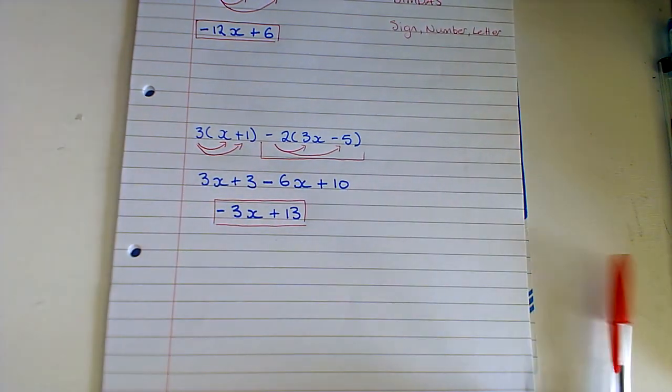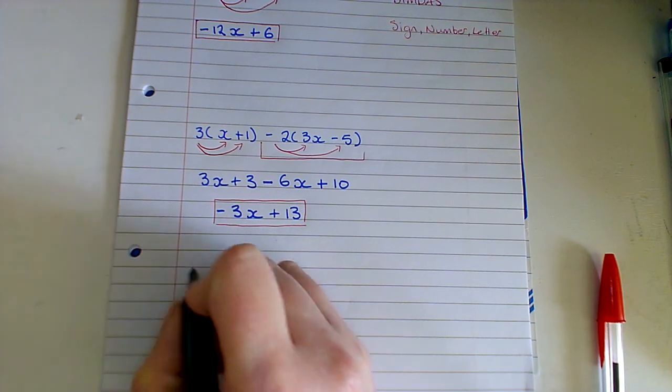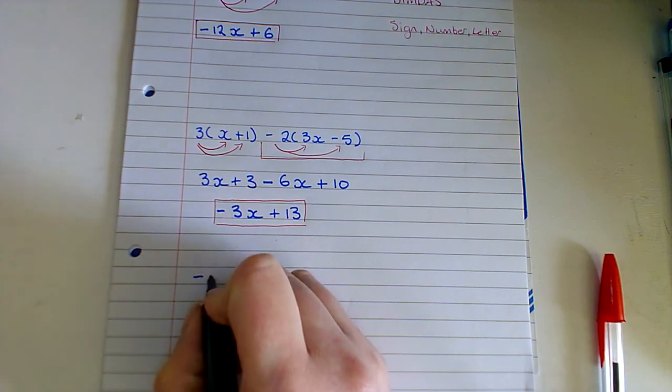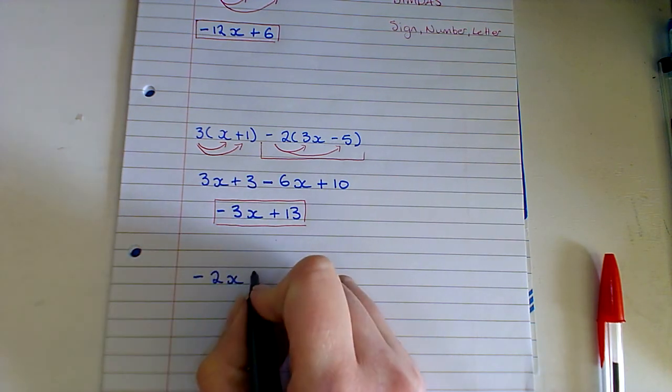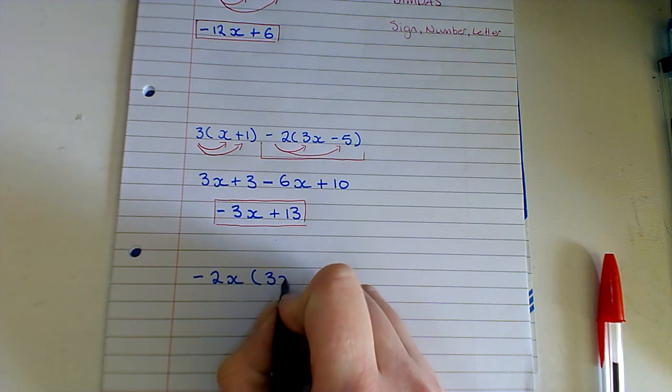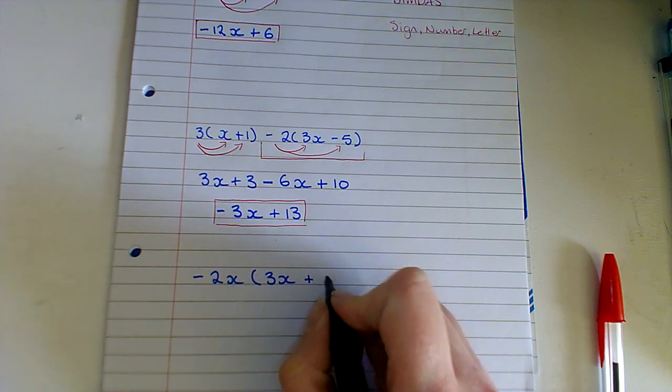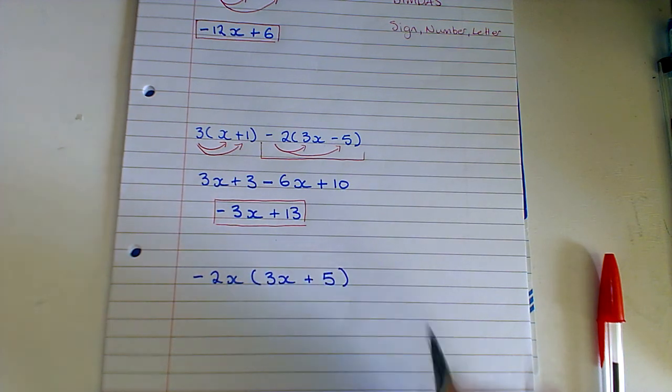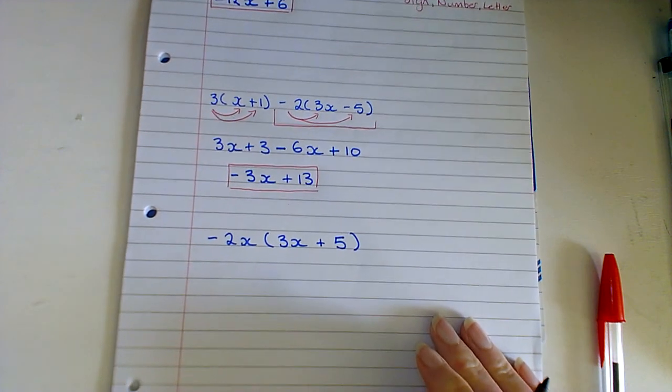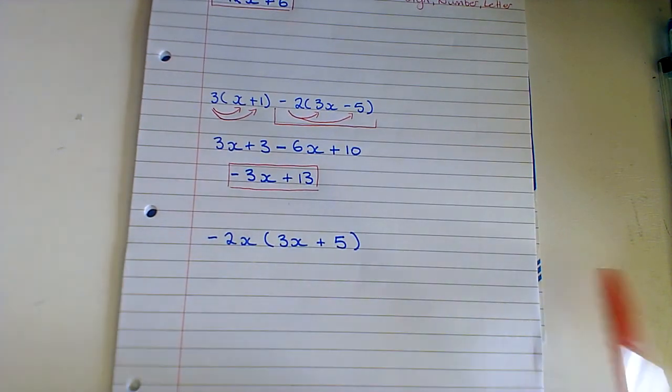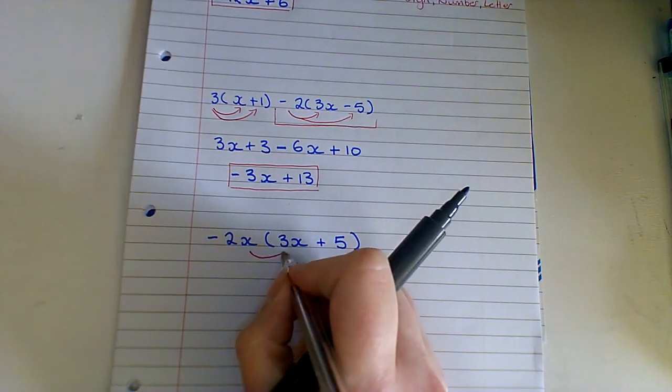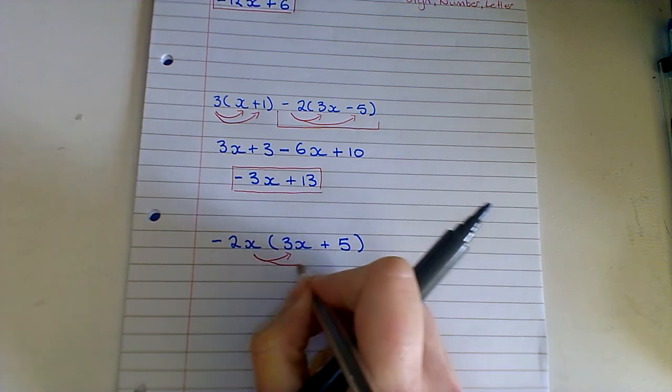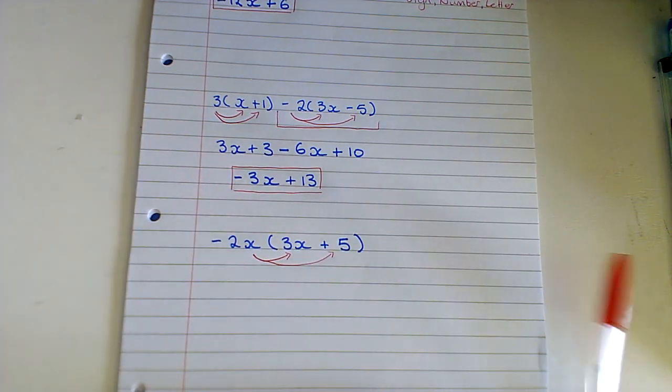I'm going to just do another one where you have maybe two letters coming up against one another. So just what would you do in that instance. So if you consider this sum: minus 2x multiplied by 3x plus 5. Again just because there's an additional letter it doesn't actually make a difference to the process here.